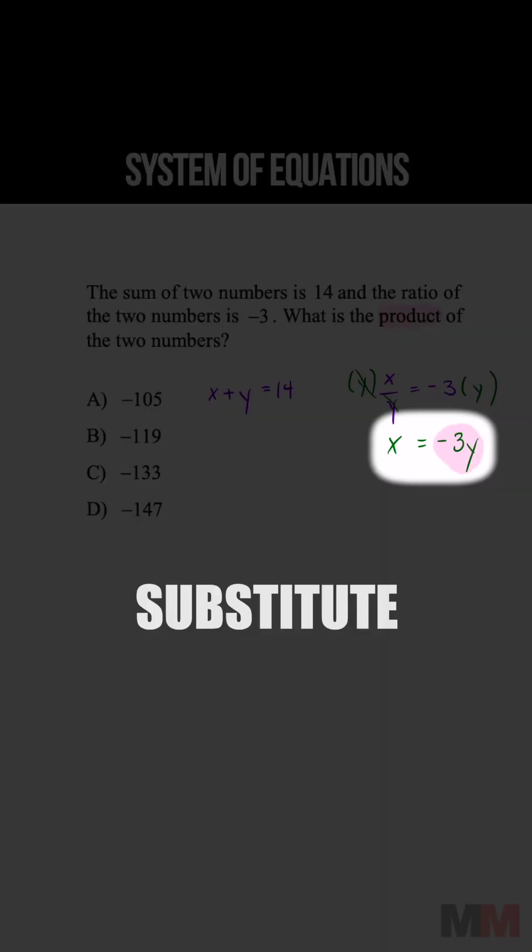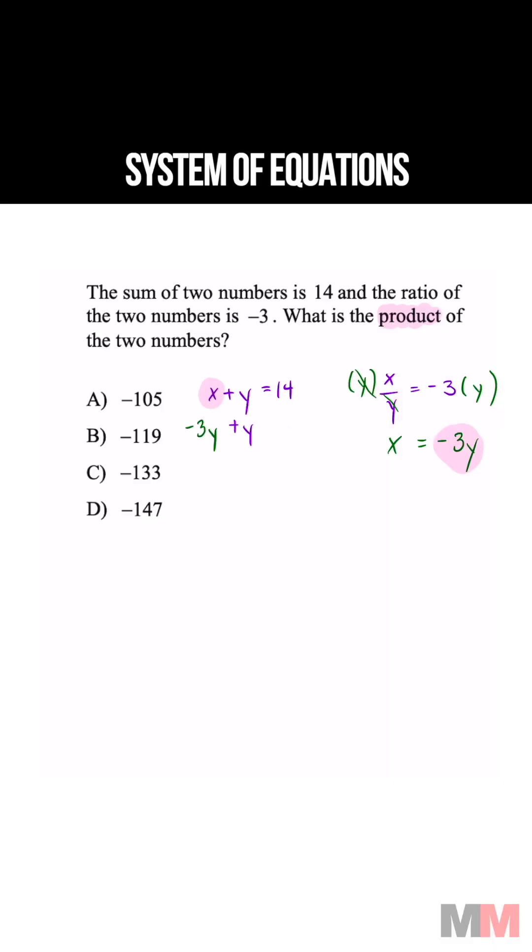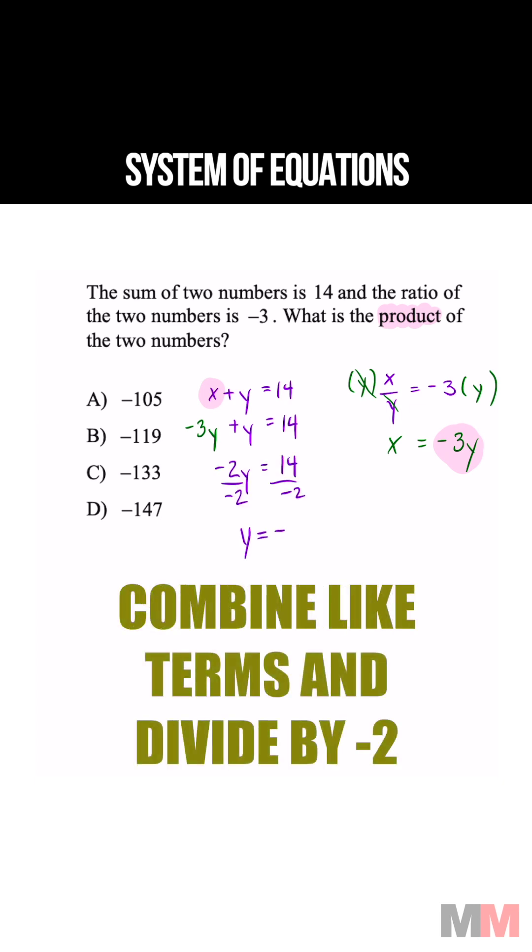Now we can substitute negative 3y for x in this equation. It's going to get me negative 3y plus y equals 14. And now I can find the value of y: y equals negative 7.